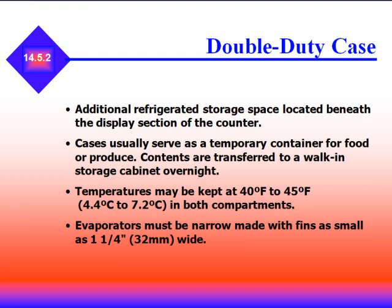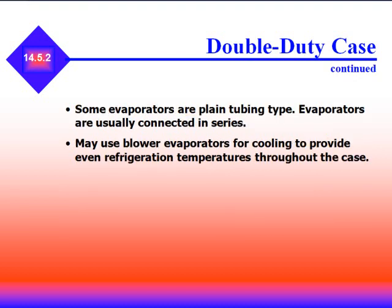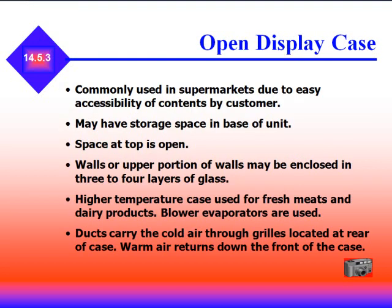A double-duty case includes additional refrigerated storage space beneath the display section. Cases usually serve as a temporary container for food; contents are transferred to a walk-in cabinet overnight. Temperatures may be kept at 40 to 45°F in both compartments. Evaporators must be narrow, made with fins as small as 1¼ inches wide. Some evaporators are plain tube types and are usually connected in series in double-duty cases. They may use blower evaporators for even refrigerant temperature throughout the case. Open display cases are commonly used in supermarkets due to easy accessibility; they may have storage space in the base and walls or upper portions enclosed in three to four layers of glass. High-temperature cases are used for fresh meats and dairy products, using blower evaporators with ducts carrying cold air through grills at the rear and warm air returning down the front.